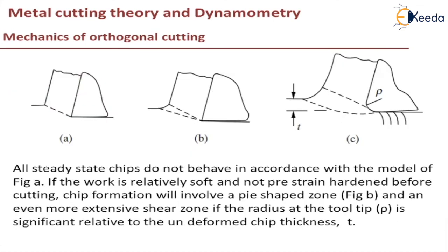Next, we will discuss several models on orthogonal cutting. In the 1940s, Ernst and Merchant discussed several models. As per this, all steady-state chips do not behave in accordance with the model of figure A. In figure A, as per Ernst and Merchant, the shear is happening on a single plane — that is, it is concentrated at a particular point.